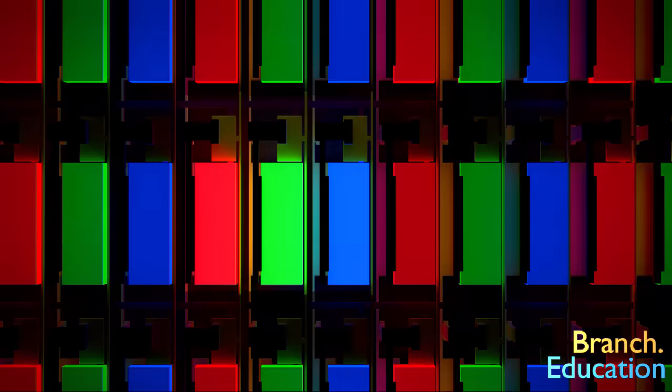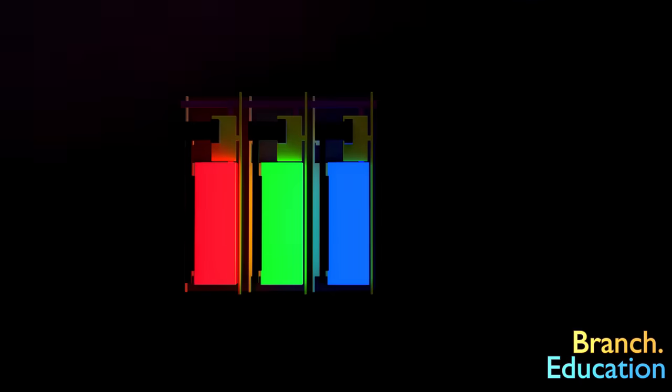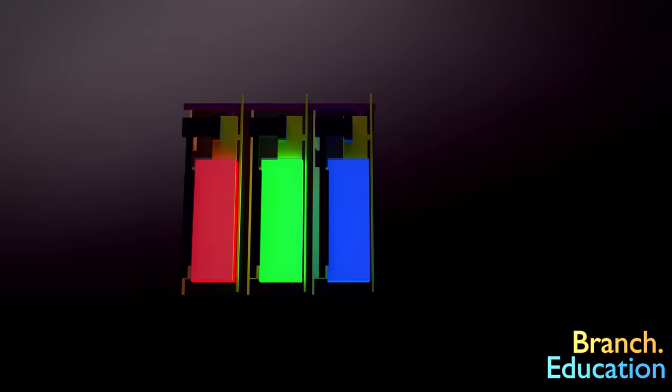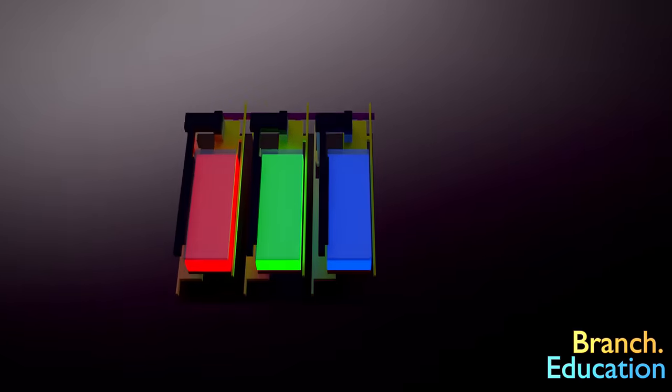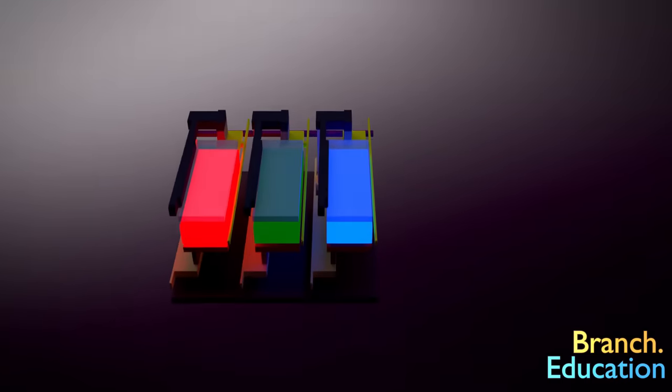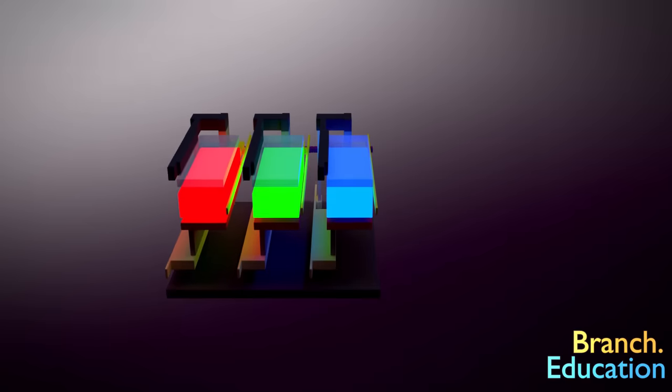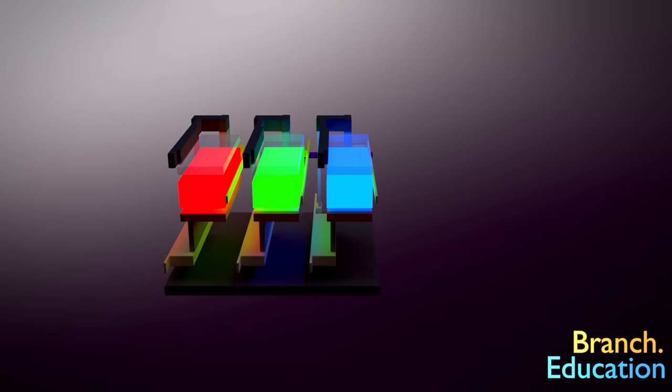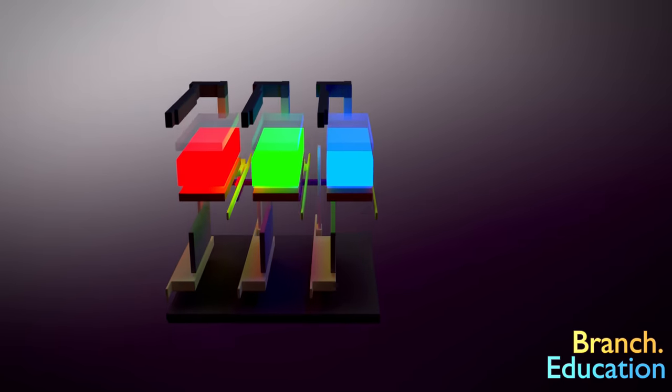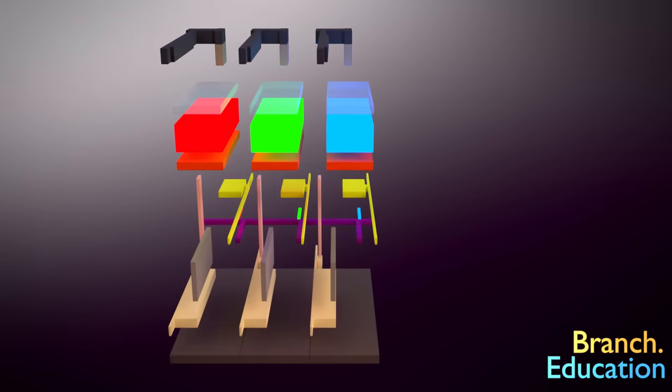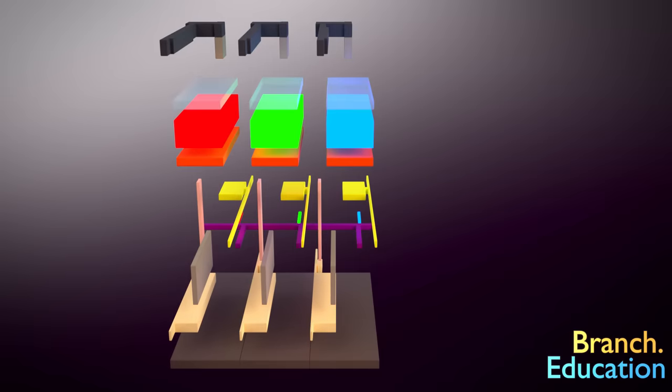OLED displays are composed of a massive grid of individual pixels, and in each pixel is a red, green, and blue subpixel. Each subpixel's light intensity is controlled by a small thin film transistor that acts as a dimmer switch. There are many layered structures in each subpixel, however explaining the function of each layer will have to be saved for a future episode.